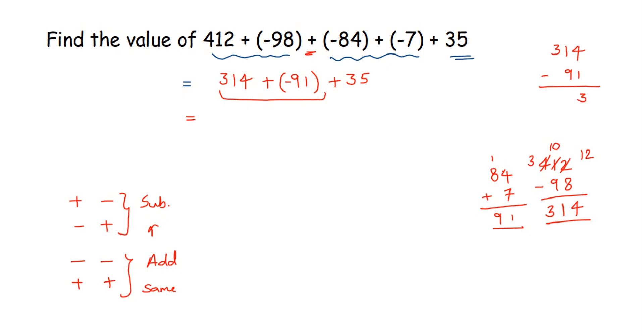4 minus 1 is 3. We cannot subtract 9 from 1. We will borrow from 3. 3 will become 2, 1 will become 11. 11 minus 9 is 2, and here we have 2. So we get 223. The sign will be positive because 314 is greater than 91, it is positive.